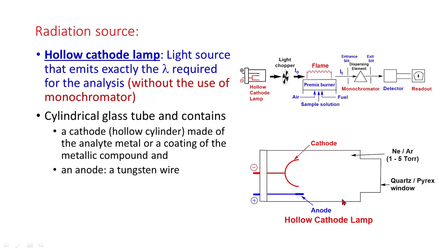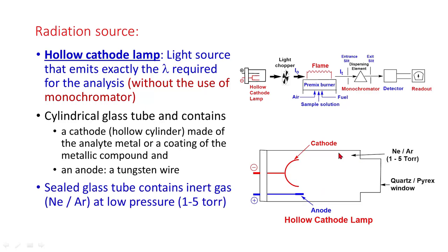It is a cylindrical glass tube that contains a cathode which is a hollow cylinder made up of metal or the coating of the metallic compound, and an anode. It is a sealed glass tube containing inert gas at low pressure, 1 to 5 torr.